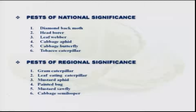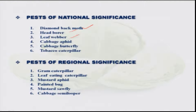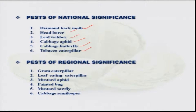In the insect pests of national significance, the diamondback moth takes first place as it is quite severe and causes huge economic loss. Occasionally you also get the head borer, the leaf webber, two species of aphids, and the cabbage butterfly, which is more serious in the northern part of India, and also the tobacco caterpillar.